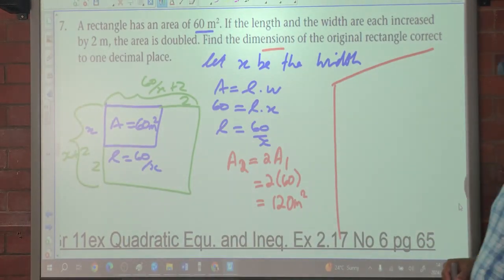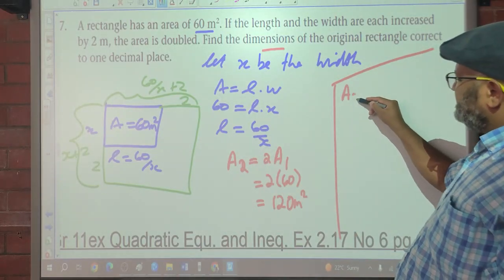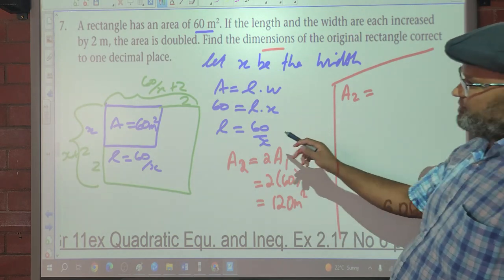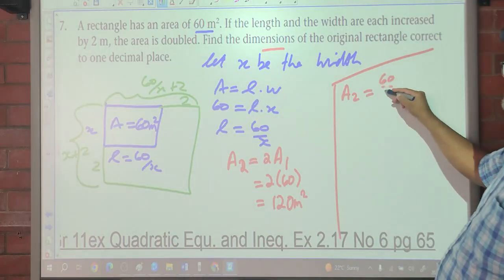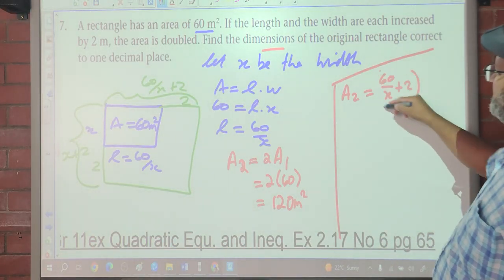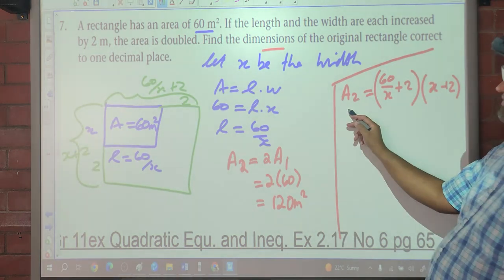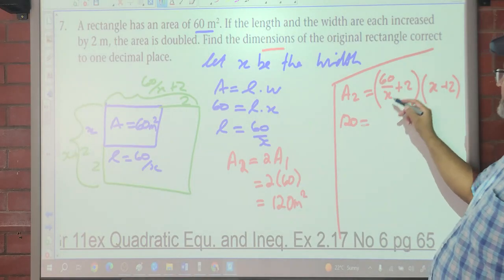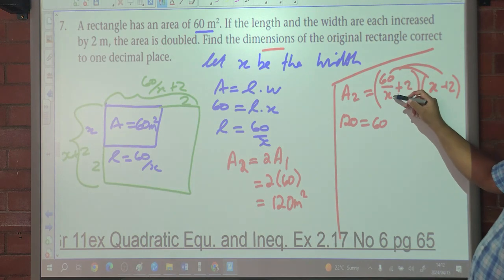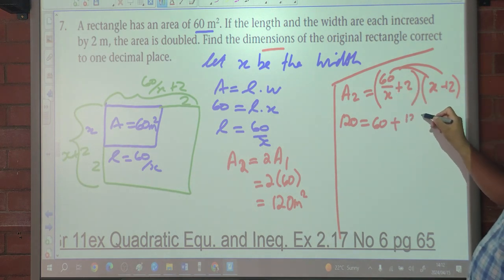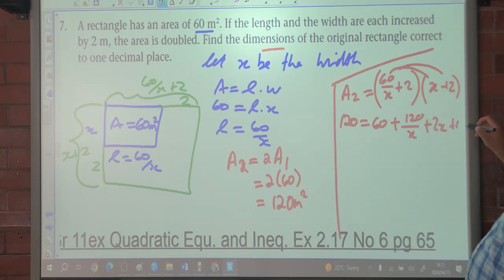Remember the area of the second rectangle is again length times width. So that's (60 over X plus 2) multiplied by (X plus 2), and that equals 120. Expanding: 120 equals 60 over X times X, which is 60; plus 60 over X times 2, which is 120 over X; plus 2 times X, which is 2X; plus 2 times 2, which is 4.